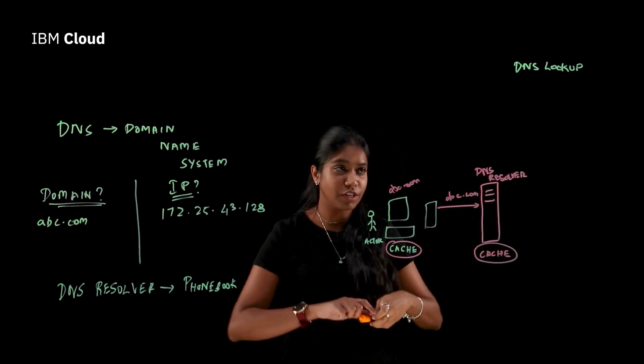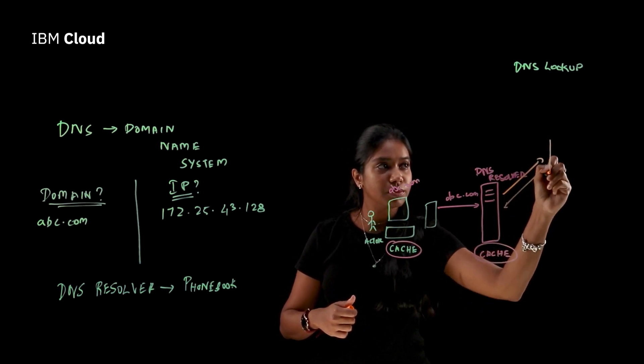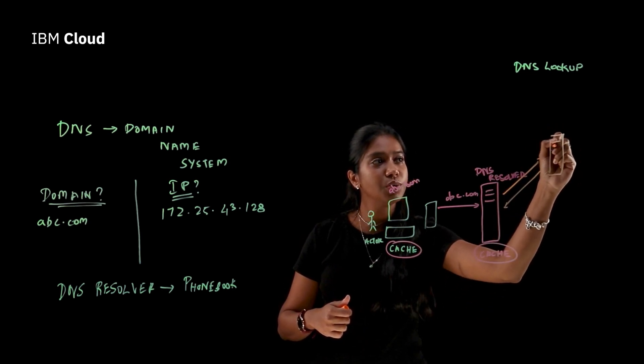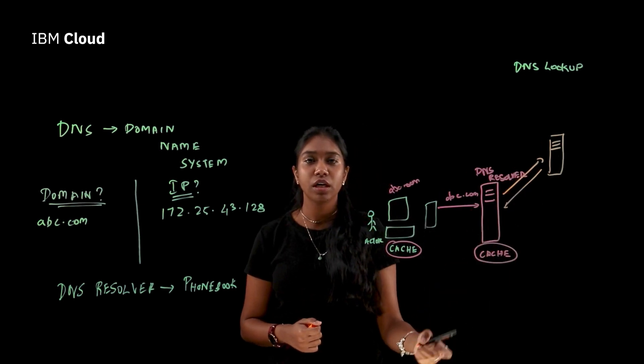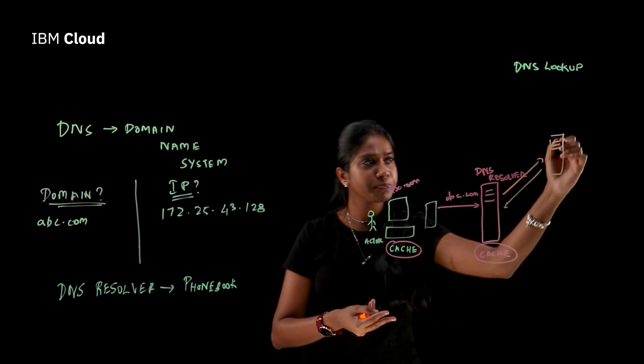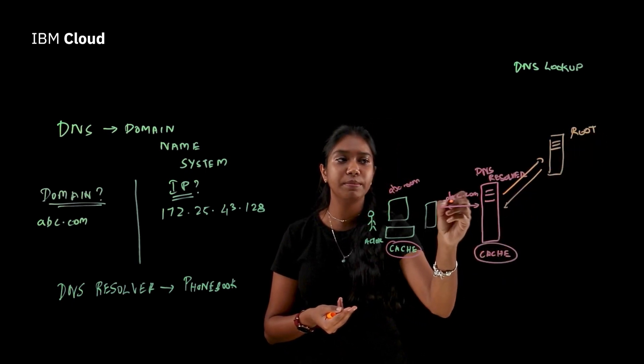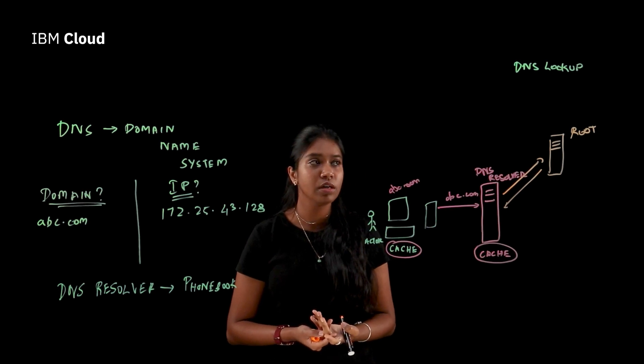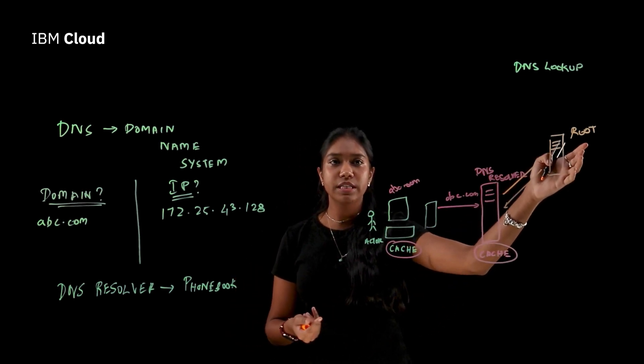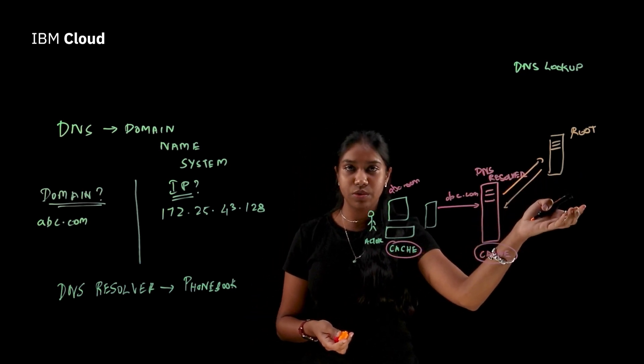I'm going to use a different color. So this is the root server. And root server is the top server or the top level in the DNS hierarchy. And the root server still doesn't have the information of abc.com that you're looking for. But what it does have is the information about the top level domain server that you have to route your request to.